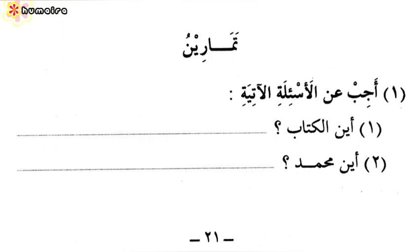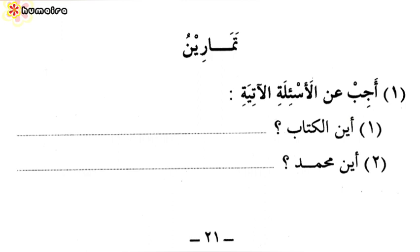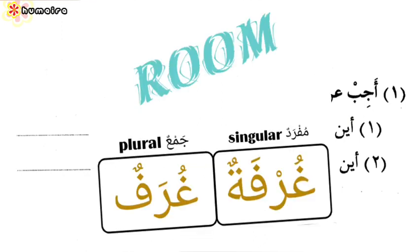Number 2: أين محمد? Where is Muhammad? هو في الغرفة — He is in the room. The plural for غرفة is غرف.